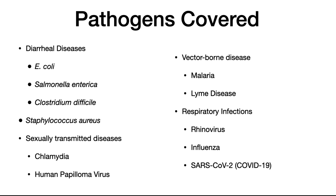Finally, we're going to end with some respiratory infections: rhinovirus, influenza, and SARS-CoV-2. Why did I pick these? Either they were really important in that they cause a significant disease burden, or I thought they had an interesting feature that was worth studying. We couldn't cover everything that causes disease in humans — there are hundreds of diseases — but this will give you a good taste of the kinds of things that are important and cause disease in humans.